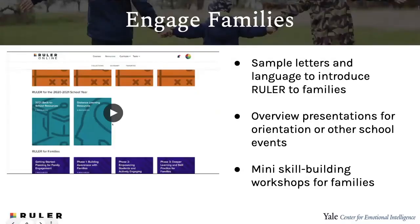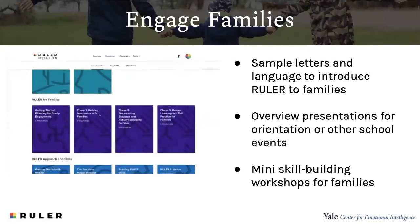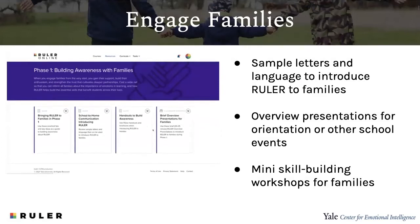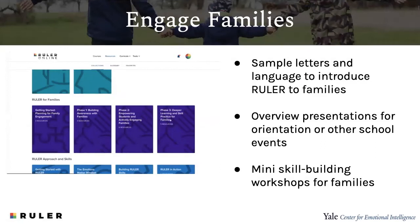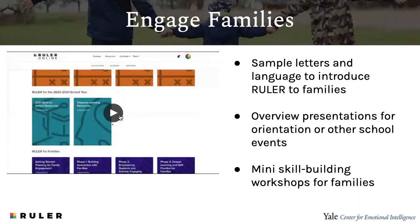We want families to be conversant and using Ruler as well. On Ruler Online, you will find information for communicating with families, including sample letters. There are two overview presentations — a shorter 25-minute version and a longer hour-long version that you can use during orientation or back-to-school events. And finally, there are short mini skill-building workshops on topics that may be of interest to your families. You can find everything you will need on Ruler Online under Resources.